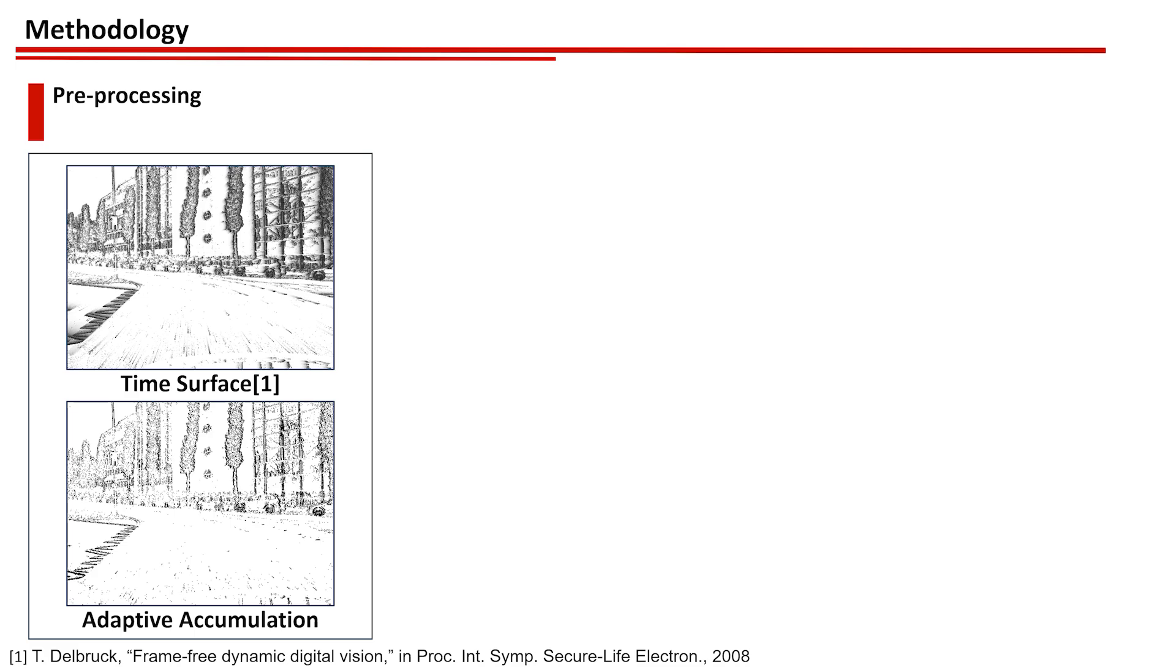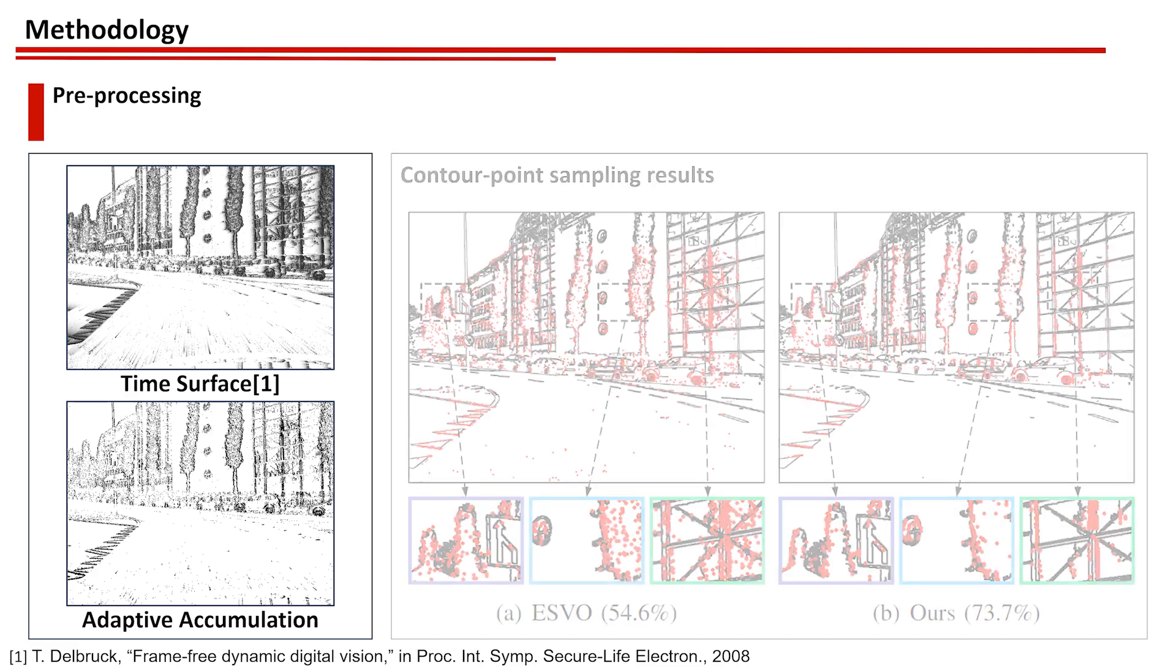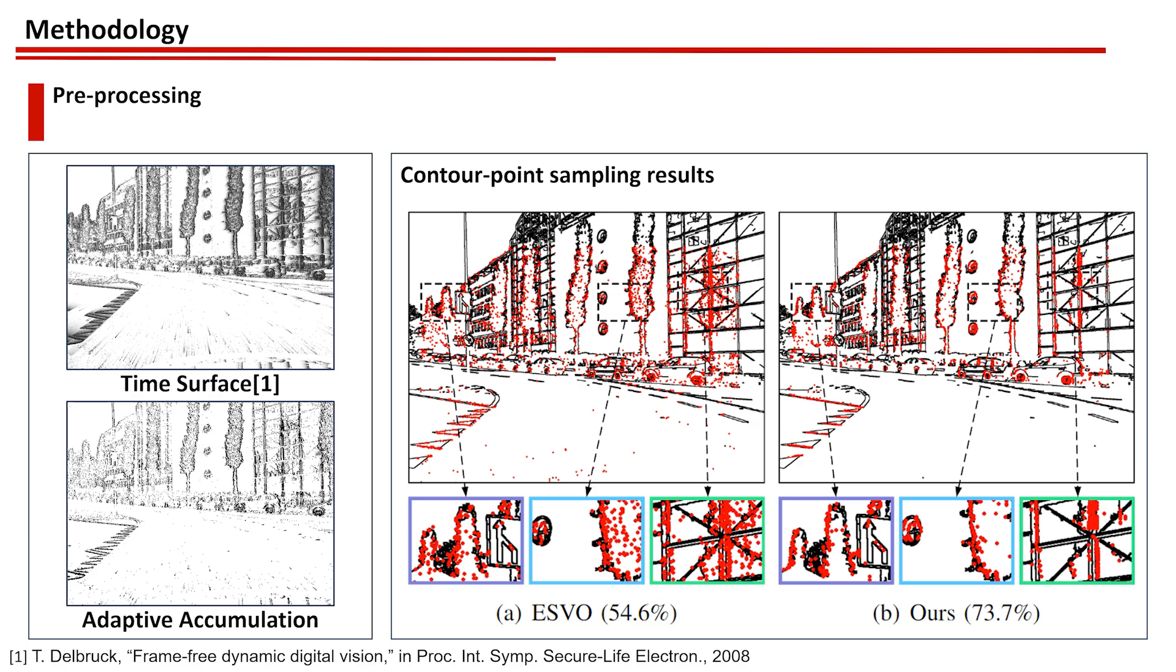Compared to the time surface, adaptive accumulation ensures clearer contours while maintaining fewer non-edge points. As a result, point sampling on Adaptive Accumulation Maps extracts more contour points than selecting the latest events in ESVO.